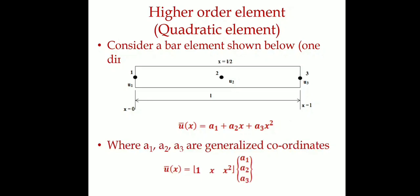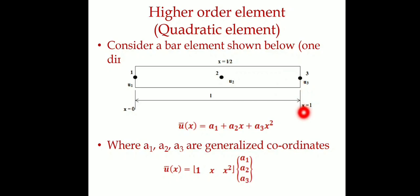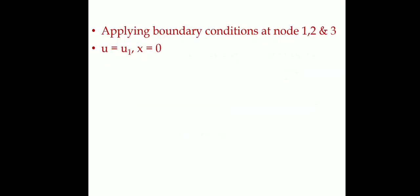Substituting the boundary conditions: at x = 0, u1 = a1. At x = L/2, u2 = a1 + a2·(L/2) + a3·(L/2)². At x = L, u3 = a1 + a2·L + a3·L². So we have three equations for three unknowns.